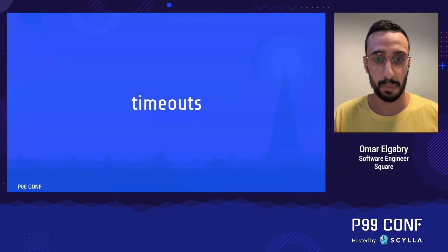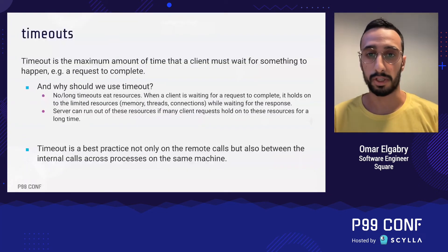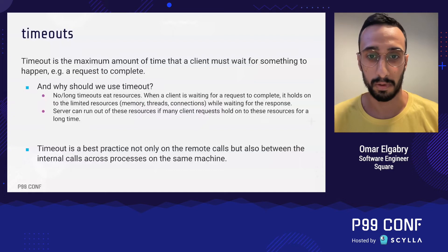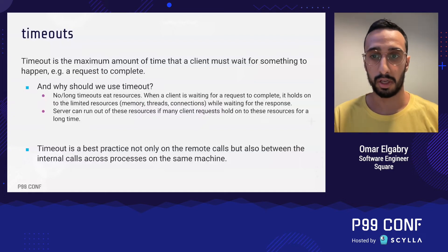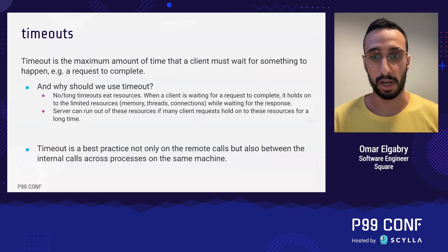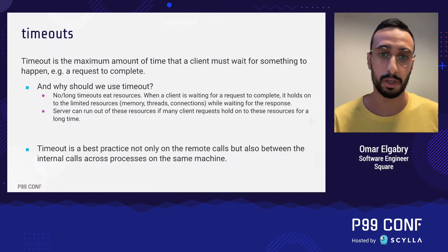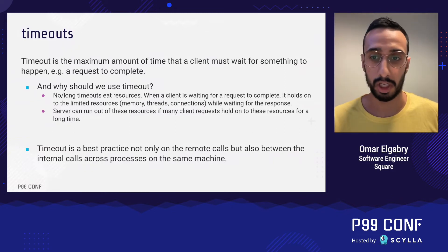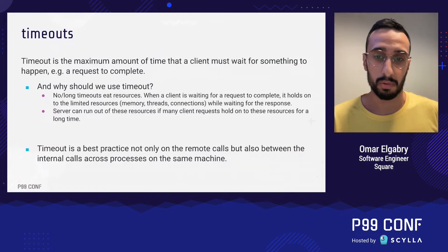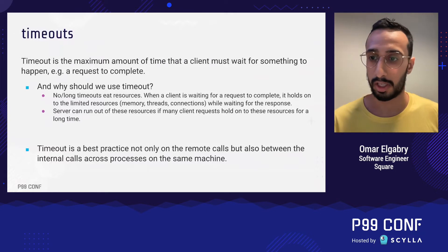Timeouts. A timeout is the maximum amount of time that a client must wait for something to happen — for example, a request to complete. Rather than waiting indefinitely, we stop waiting after the timeout period has elapsed. No or long timeouts eat resources: when a client is waiting for a request to complete, it holds onto limited resources like memory, threads, and connections while waiting for the response.